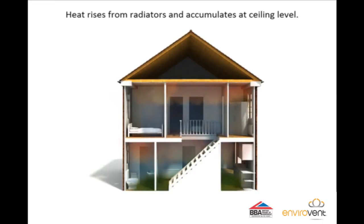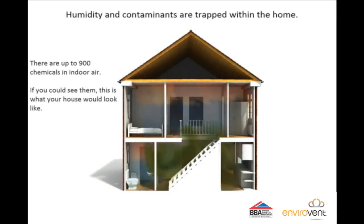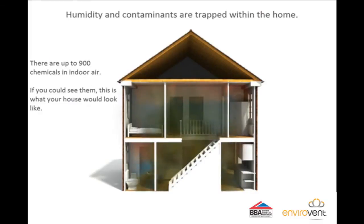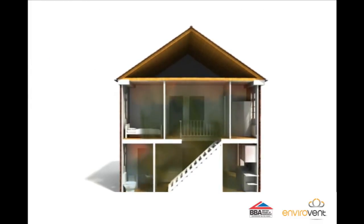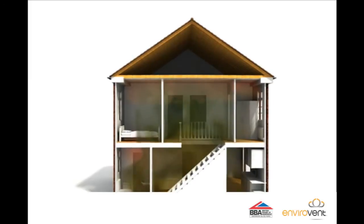If you could see the heat distribution along with all of the airborne gases and contaminants in a poorly ventilated home, then it would probably look something like this. We call this a viral soup. The simulation conditions in the property are taken at the worst possible case scenario, where indoor relative humidity is at 100% and outdoor relative humidity is also 100%.